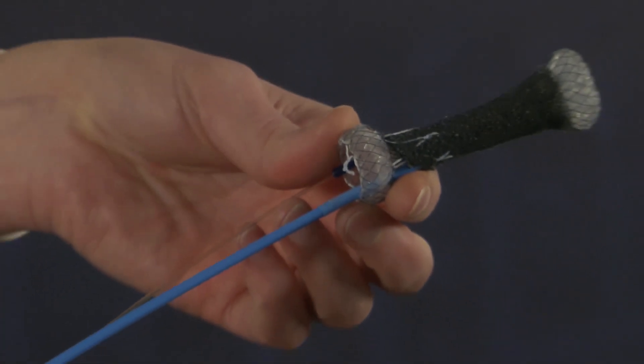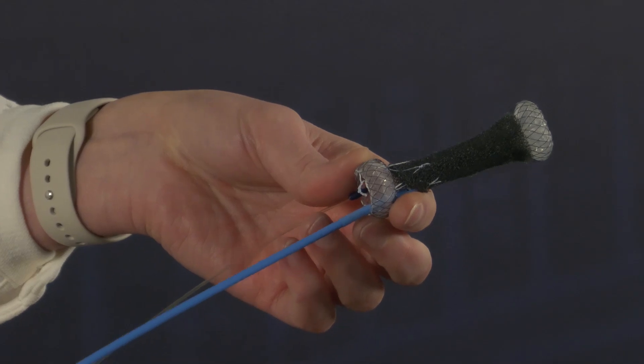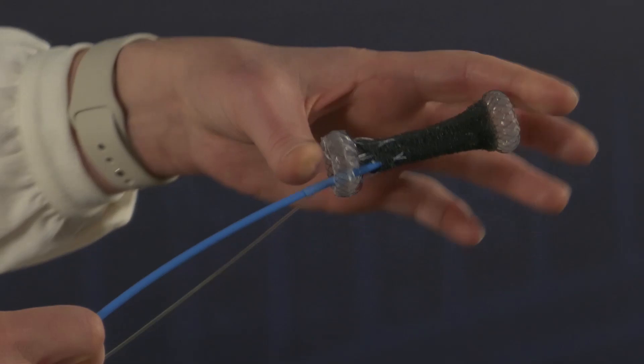Then the stent is in situ and you can remove the whole connecting system, making sure the blue tube stays in place because that's connected to the stent and you don't want to pull that. So it's just like with ERCP - you take out the introduction system but keep the blue tube in place.